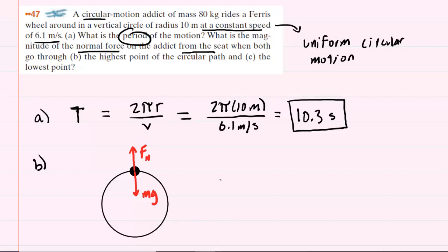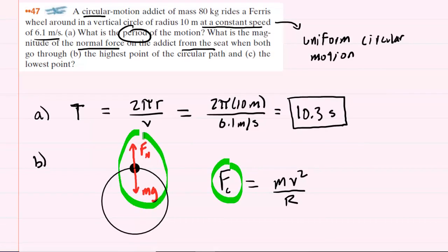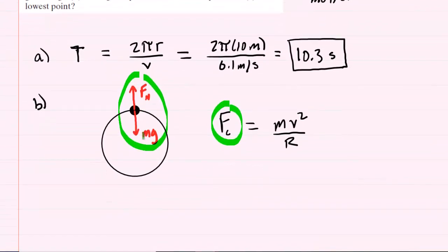Now during uniform circular motion, we know that the centripetal force is equal to the mass times the speed squared divided by the radius of the circular path. The centripetal force is going to be made up of these two forces, so we have to include both of them in our centripetal force expression. Now we can see that the gravitational force is pointing downward, so we perhaps can call that negative mg. And then the normal force is pointing upward, so we would have plus the normal force Fn.